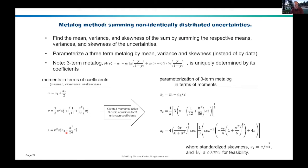Basically, we're going to sum the means, variances, and skewnesses of the uncertainties. We're going to parameterize a three-term metalog by mean, variance, and skewness instead of by data, and then we can represent the metalog probability distribution over the sum. The three-term metalog is uniquely determined by its coefficients — if you have the coefficients, you have that metalog exactly. The same is true with bounded and semi-bounded metalogs if you have the upper and lower bounds.